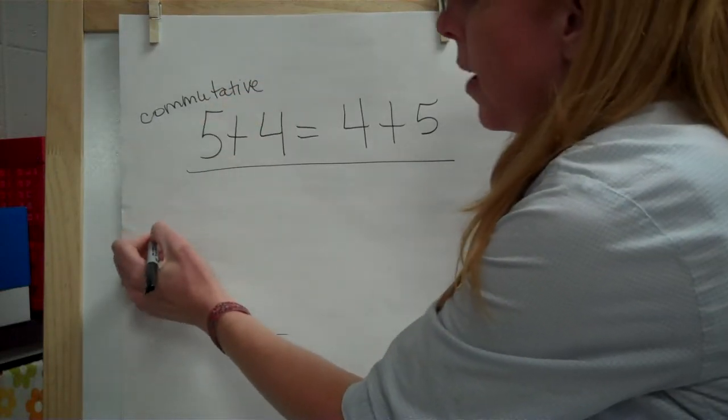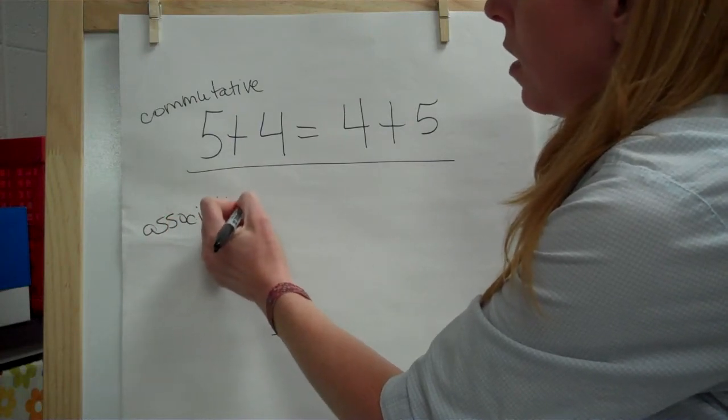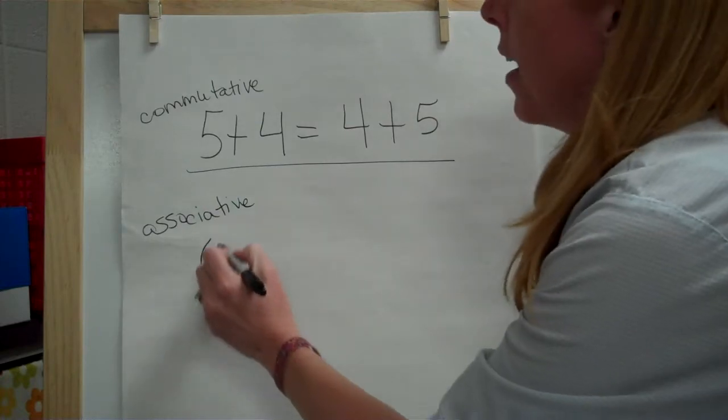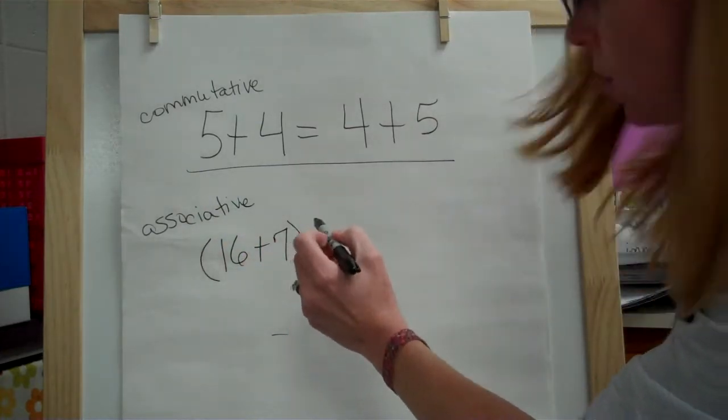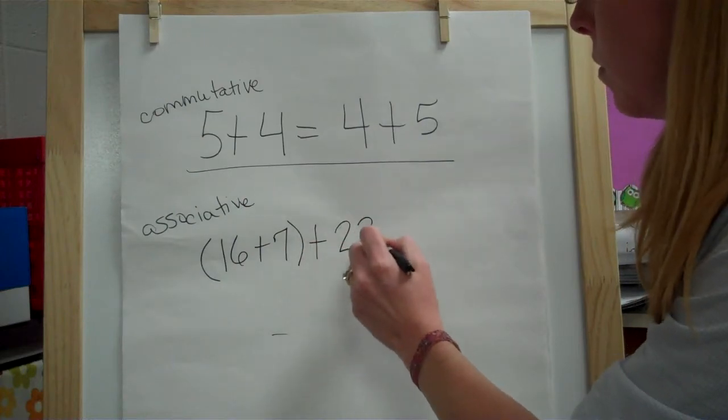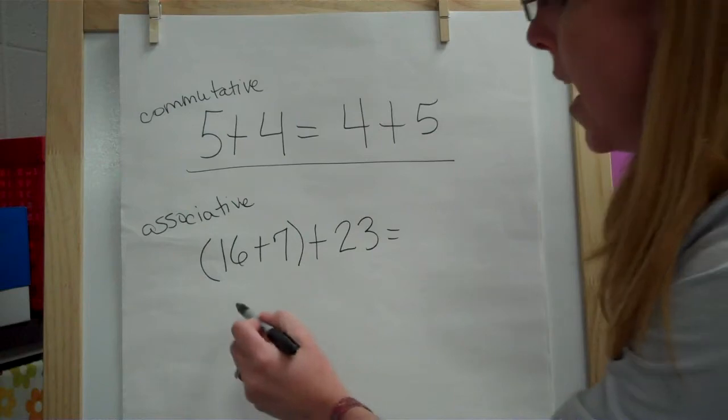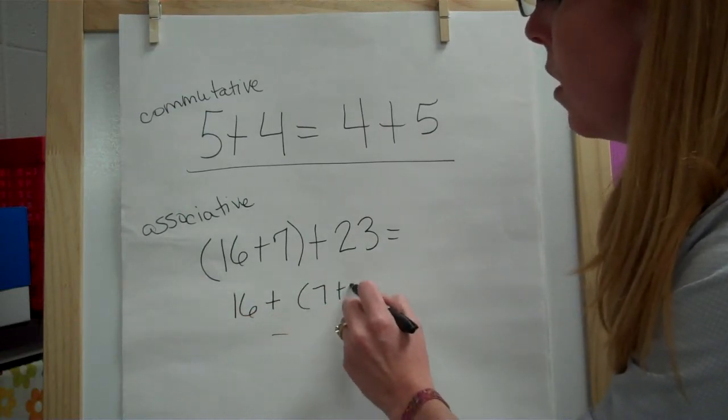We also learned about the associative property, and that's where you can change the groupings of numbers. So if I had 16 plus 7 plus 23, I could change the way those numbers are grouped to make them easier to add. I could put the 16 out by itself and then 7 plus 23.